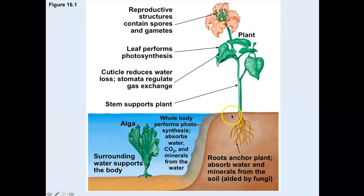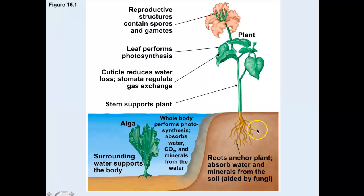And lastly, we have roots. Roots anchor the plant to the earth, and minerals and water are absorbed through the roots. The whole plant is no longer surrounded by water, so there are specialized structures to absorb water and minerals from the earth.